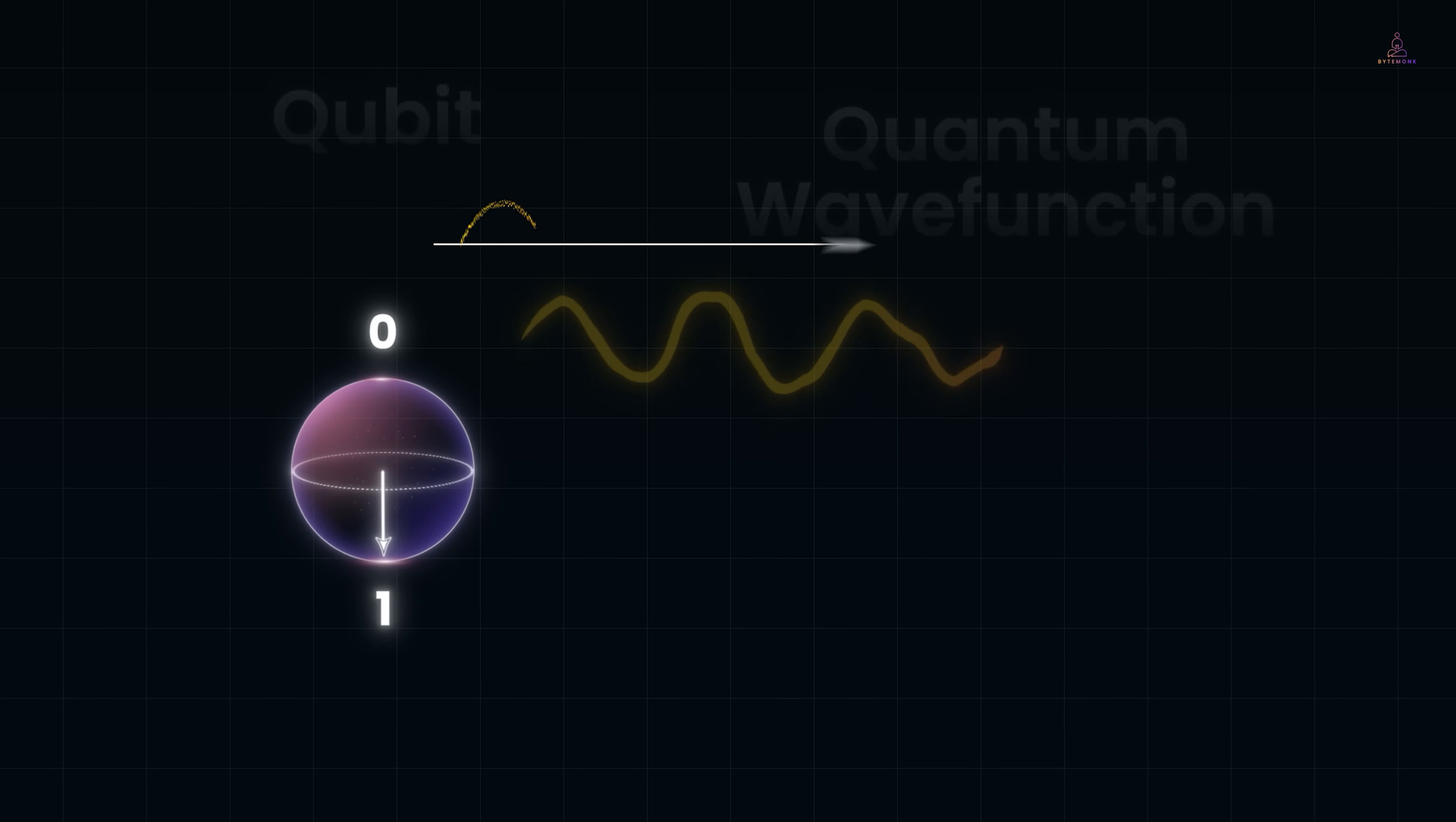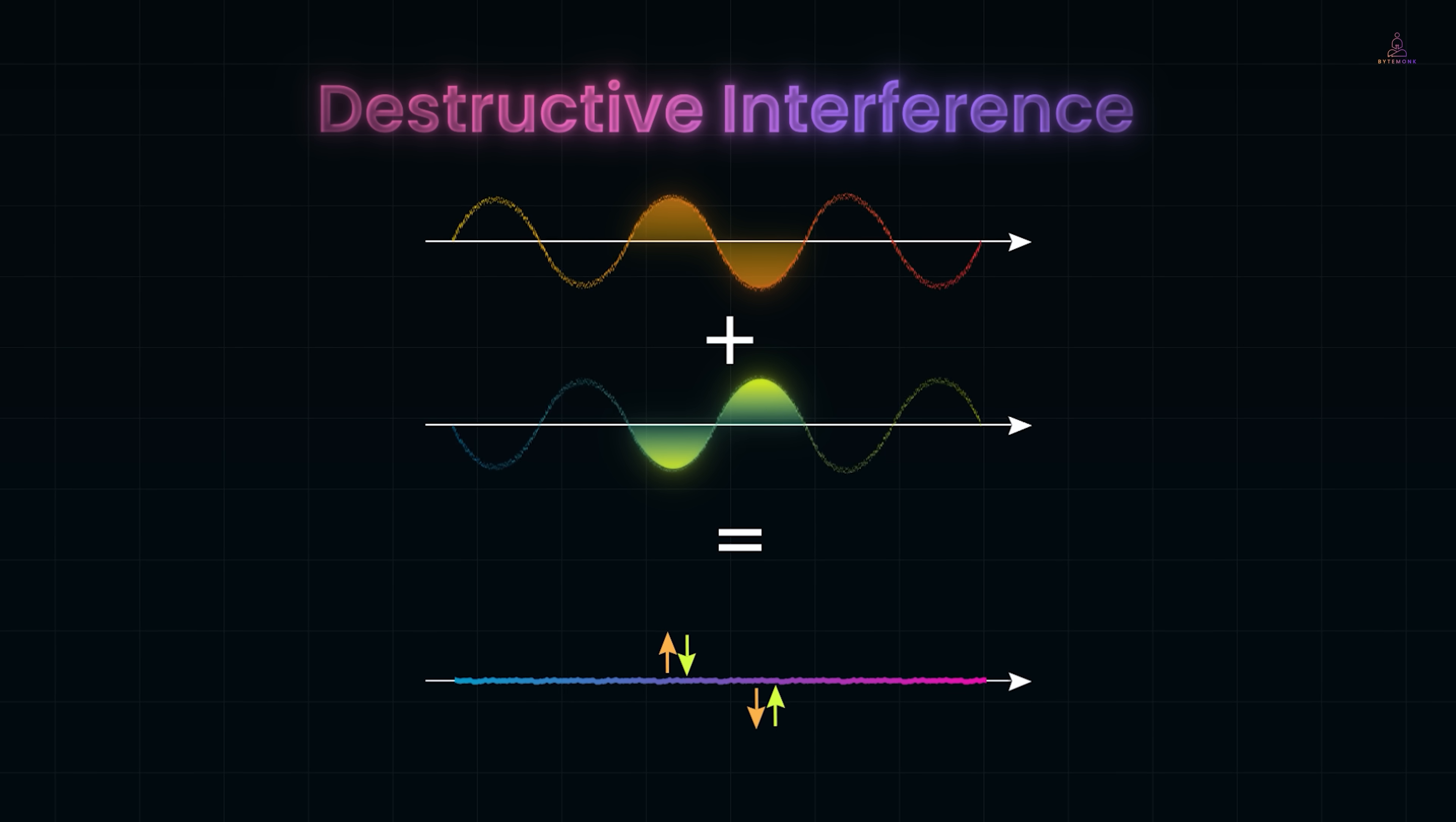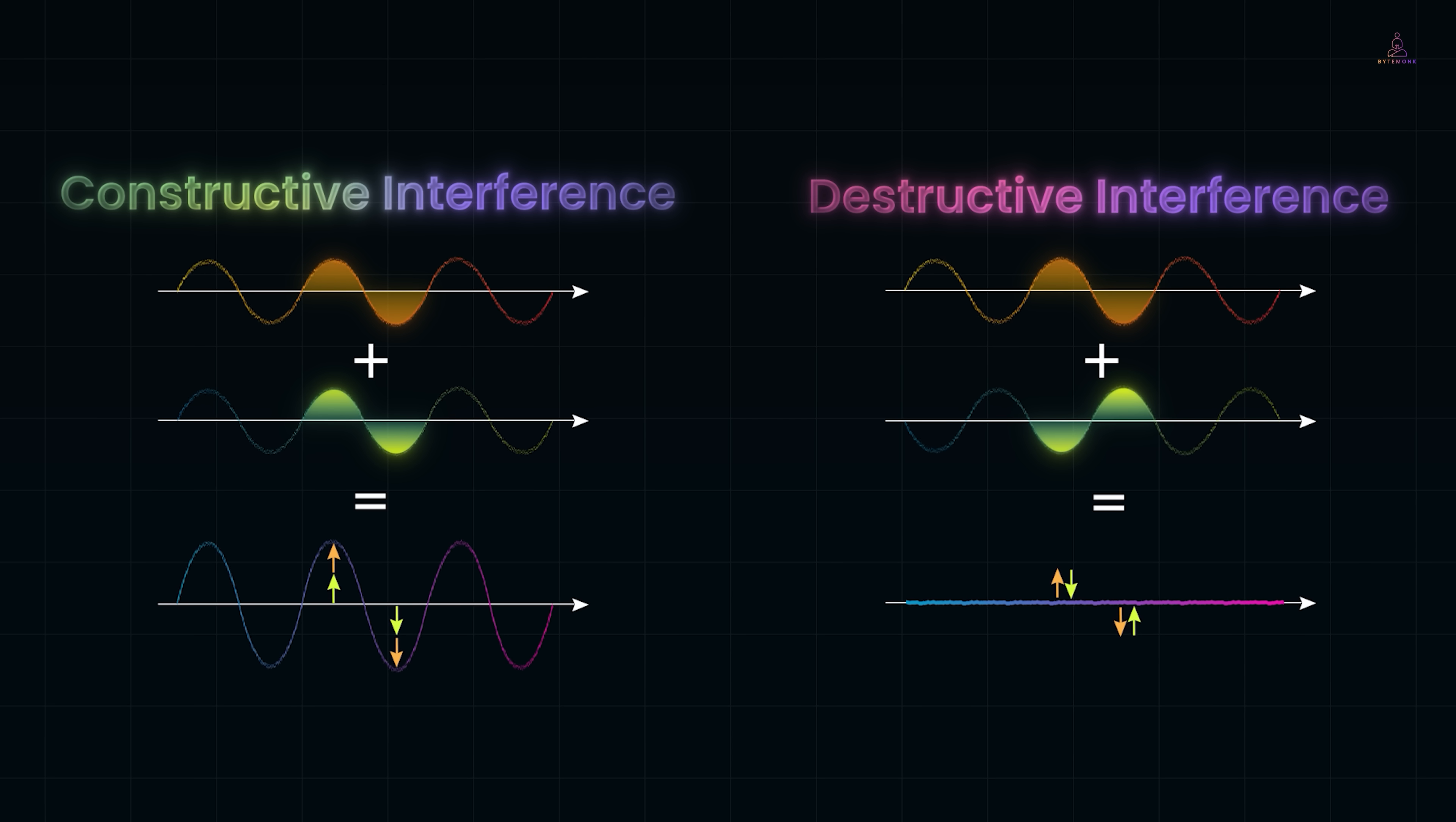So once you have superposition and entanglement working together, quantum computers can use interference to amplify the right outcomes and cancel out the wrong ones. That's where their true power comes from. Think of qubits like ripples on a pond. When two ripples meet, sometimes they add up to make a bigger wave, which is also known as constructive interference. And sometimes they cancel each other out to make the water flat, also known as destructive interference. Quantum states behave the same way. Their probabilities can reinforce or cancel depending on how we apply gates. The trick of quantum algorithms is to set up the math so that wrong answers cancel each other out, and the right answer is the one that's most likely to pop out when you measure.